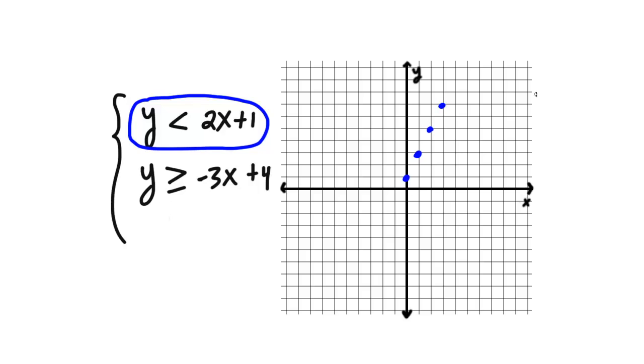And we'll use a different color for the second equation here. And that one starts at 4. And it goes down 3 over 1 because the slope is negative 3, down 3 over 1, down 3 over 1. Okay, you should notice that the blue line is dashed because it's just a less than. And the pink line is solid because it's greater than or equal to.